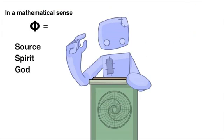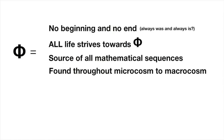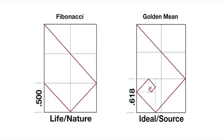So phi is basically source, or spirit, or God, in a mathematical way of thinking. The math of God. Don't forget that this sequence is an intimate part of nature itself. I'm going to call it source. It is the source of all mathematical sequences, and all life in existence grows based on phi.